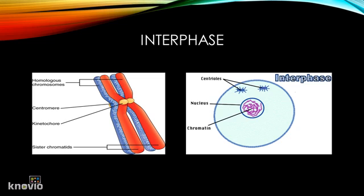These strands of DNA are actually called chromatin. As the process of mitosis begins getting closer, the cells begin frantically preparing themselves for division. One of the things that happens is that all of the DNA replicates itself so that the cell has two copies of every strand of DNA. The duplicates, or copies, are called sister chromatids.